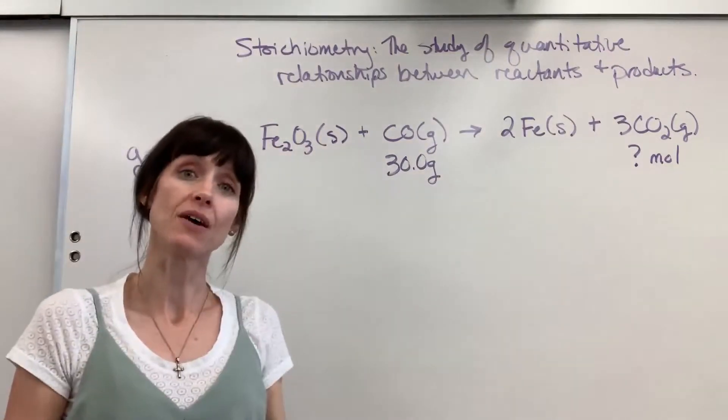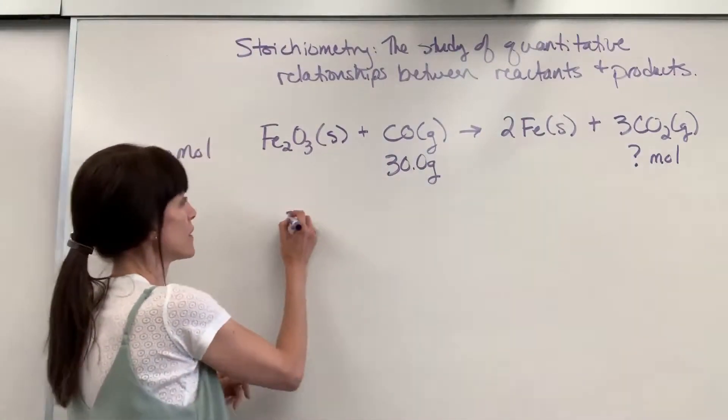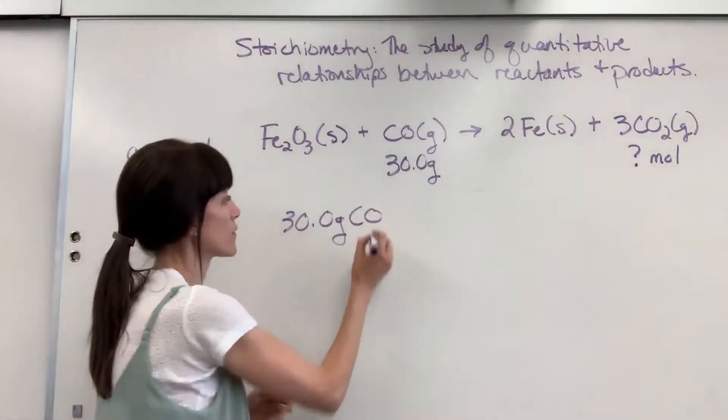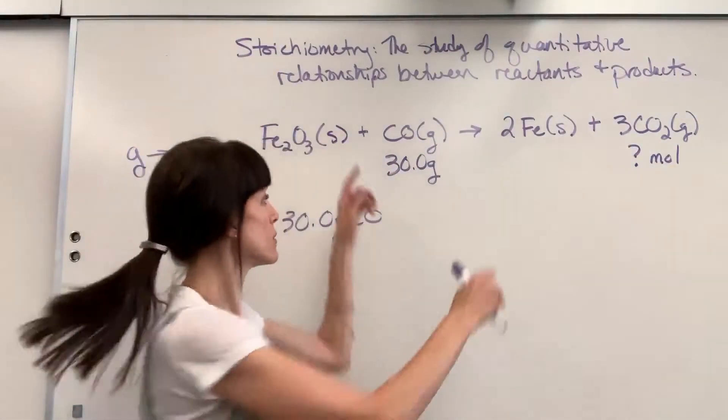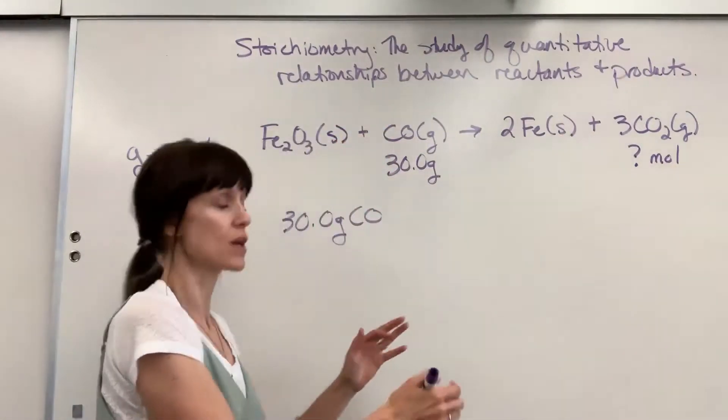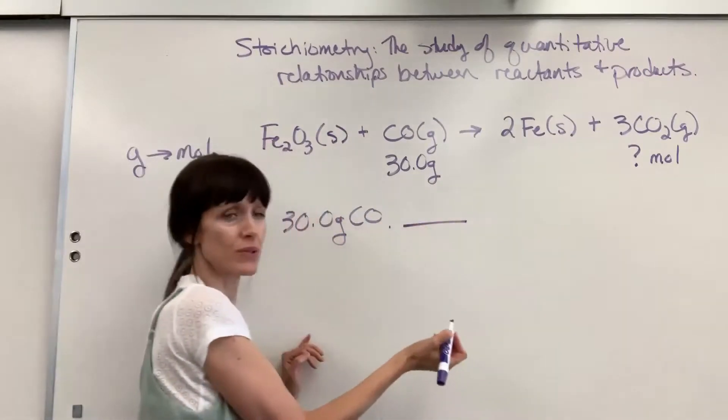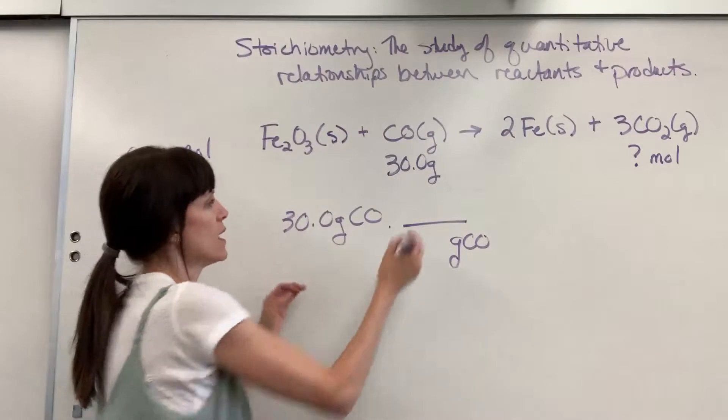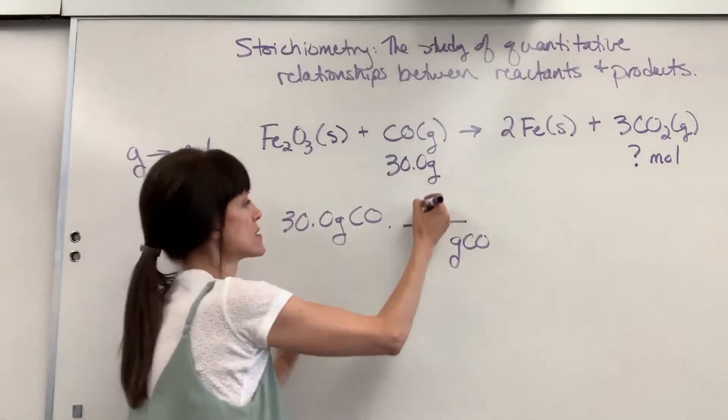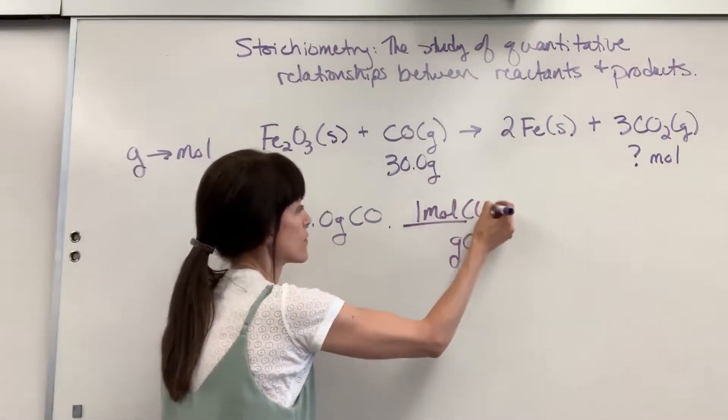So let's write down what we're given. We have 30 grams of carbon monoxide. I want to walk this bridge but in order to do it, I use molar ratios. So I bring this to moles. We're going to get rid of the grams of carbon monoxide by using the molar mass to go to moles of carbon monoxide.